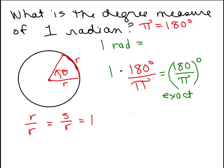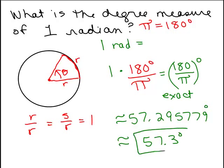So I get in my calculator 57.295779 approximately. So it depends how far you want to round it. So let's say rounded to the nearest tenth of a degree, it would be 57.3 degrees.